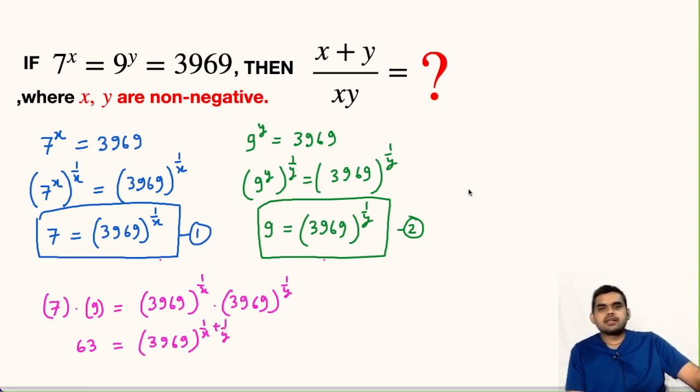Why? Because we know that we have a property a^m multiplied with a^n is equal to a^(m+n).